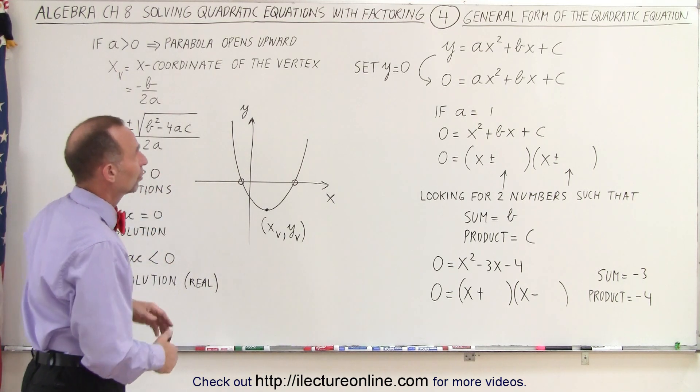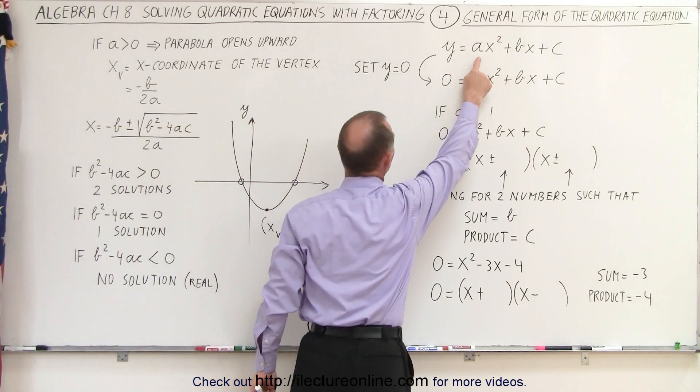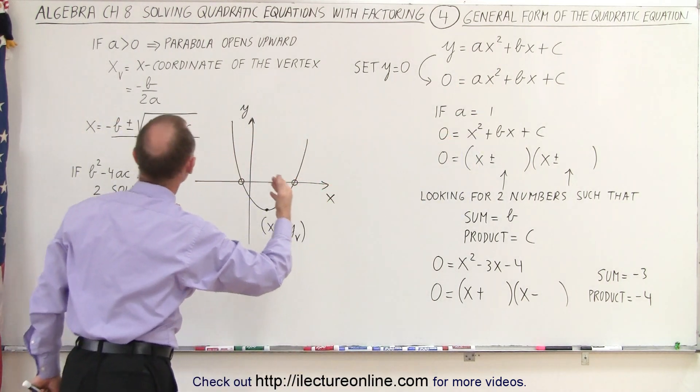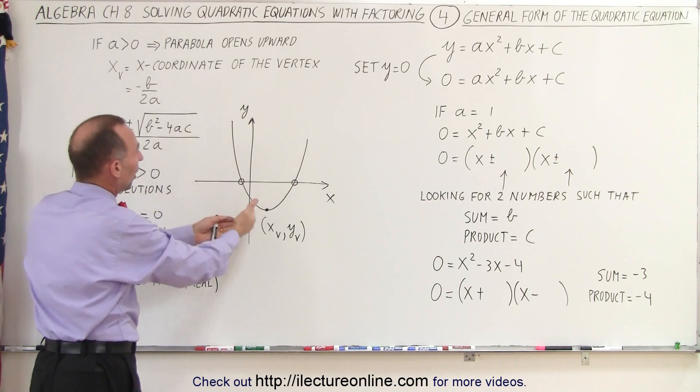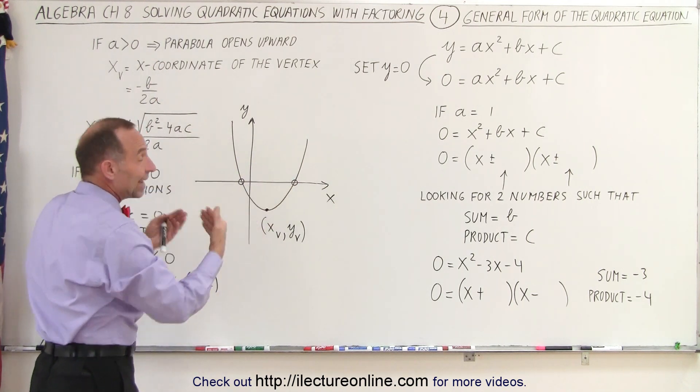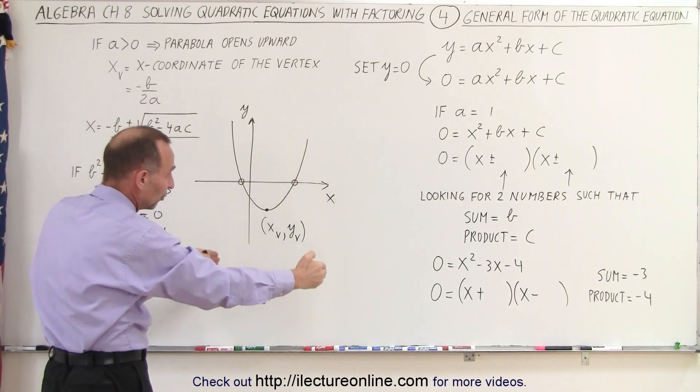If a, the coefficient in front of the x-square, is positive, then we know the parabola opens upward, looks like this. If a is negative, then the parabola opens downward.